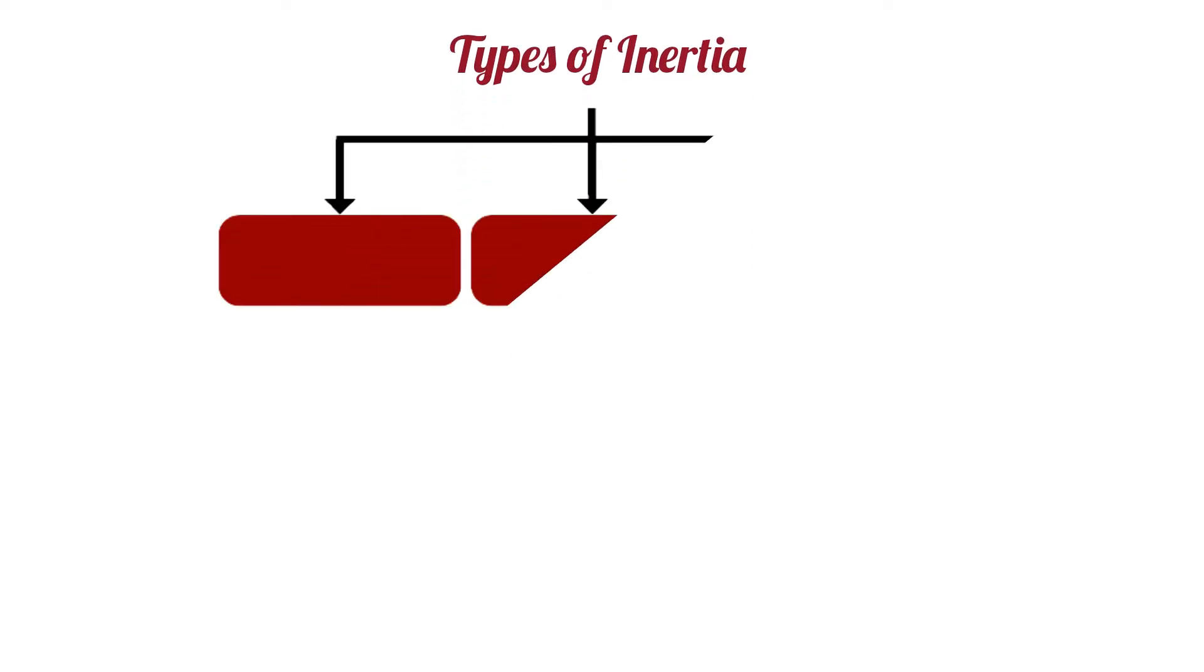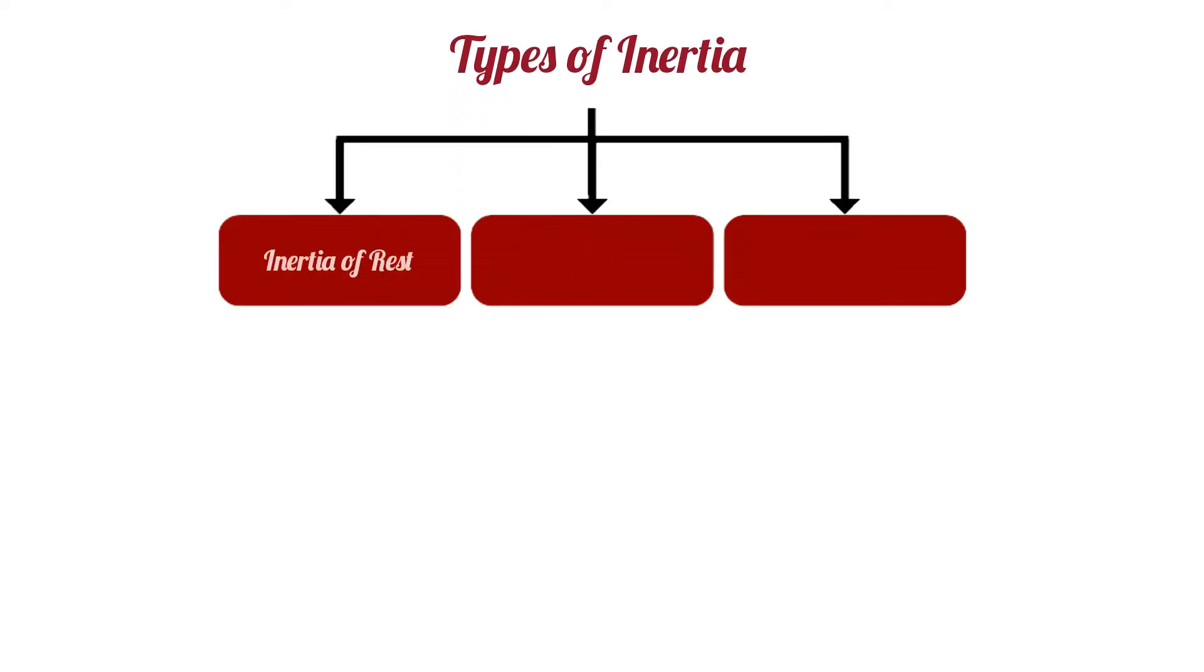Types of inertia. There are three types of inertia: the inertia of rest, the inertia of motion, and the inertia of direction.